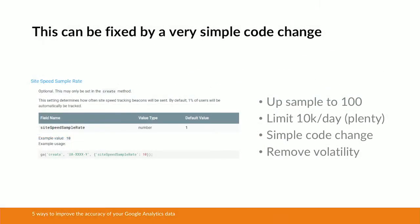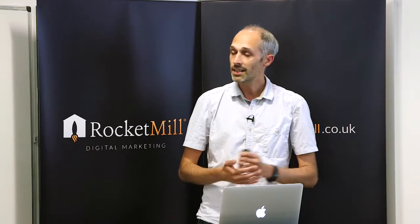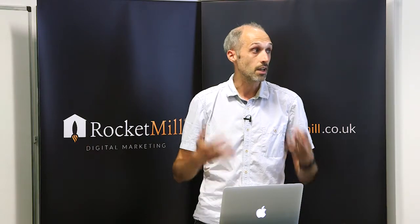The good news is that can be changed through some very simple changes to your Google Analytics tracking code. If you don't have Google Tag Manager enabled, you can ask your developer to add the site speed sample rate call to the create line of your Google Analytics tracking code. You can set that number anywhere between 1 and 100. I'd recommend setting it to 100, which means it will collect page load speed data for all of your audience. For particularly large websites it will limit data collection at 10,000 data points a day, but that's still a huge amount of data — a lot more than before — and it gives you the ability to segment and slice that data in a lot more detail.